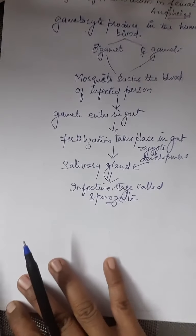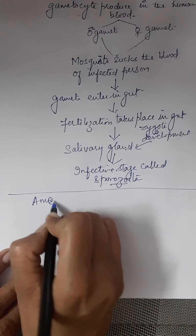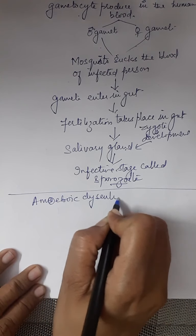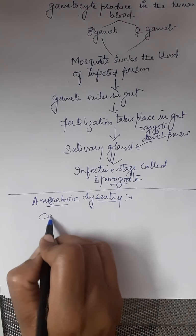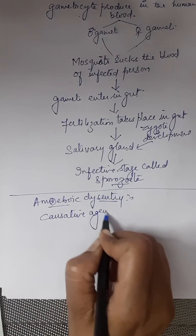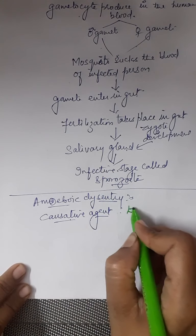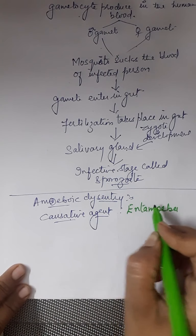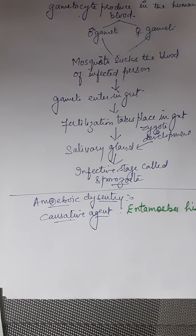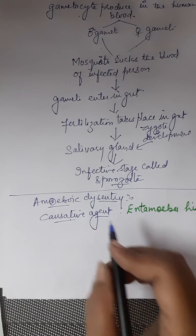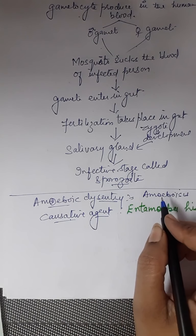Now we come to the next protozoan disease, which is amoebic dysentery. The causative agent of amoebic dysentery is Entamoeba histolytica.